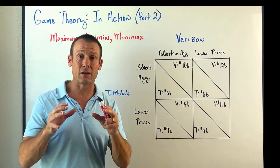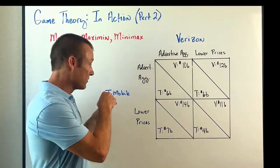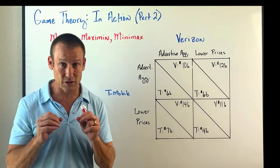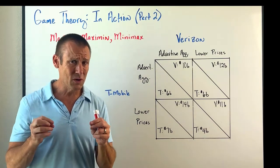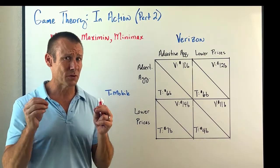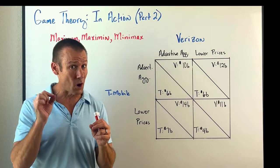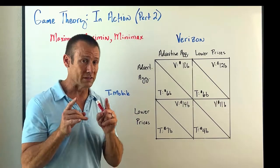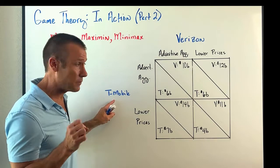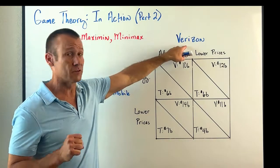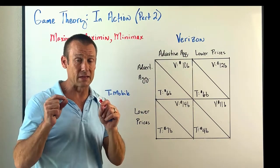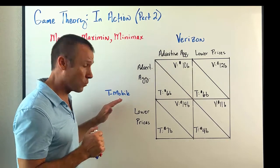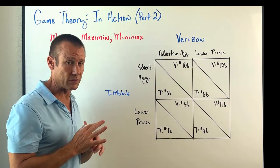We need to determine if either player has a dominant strategy — that's always the first thing to do, because if they do, we can assume they're going to follow the first rule of game theory, which is always play your dominant strategy. So let's figure out: does T-Mobile have a dominant strategy? Does Verizon have a dominant strategy?